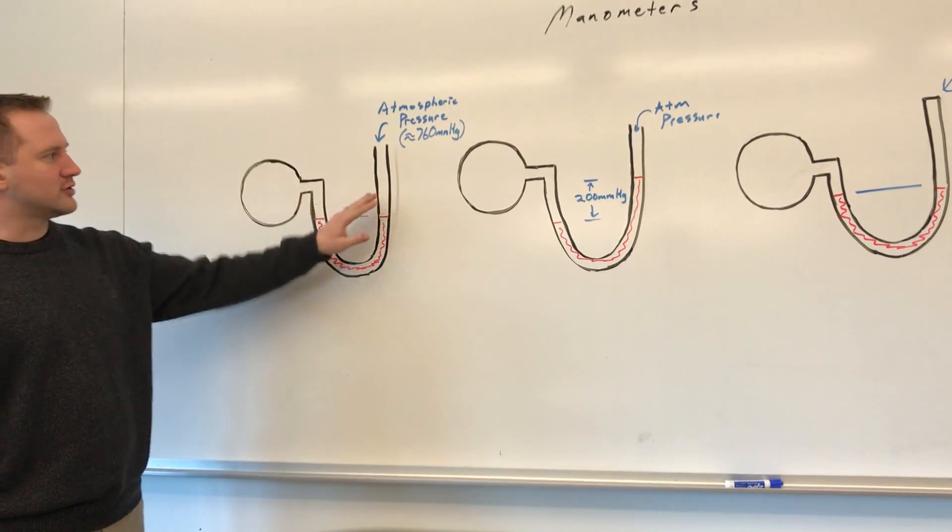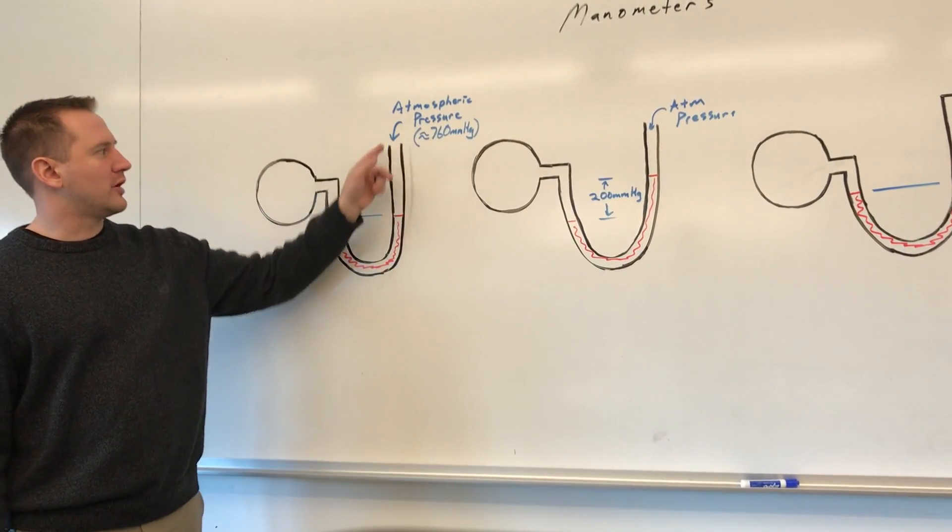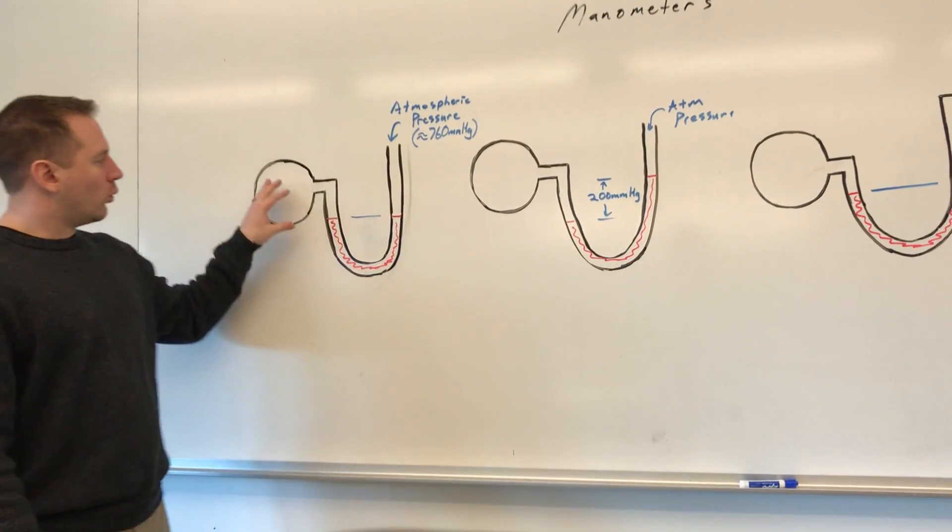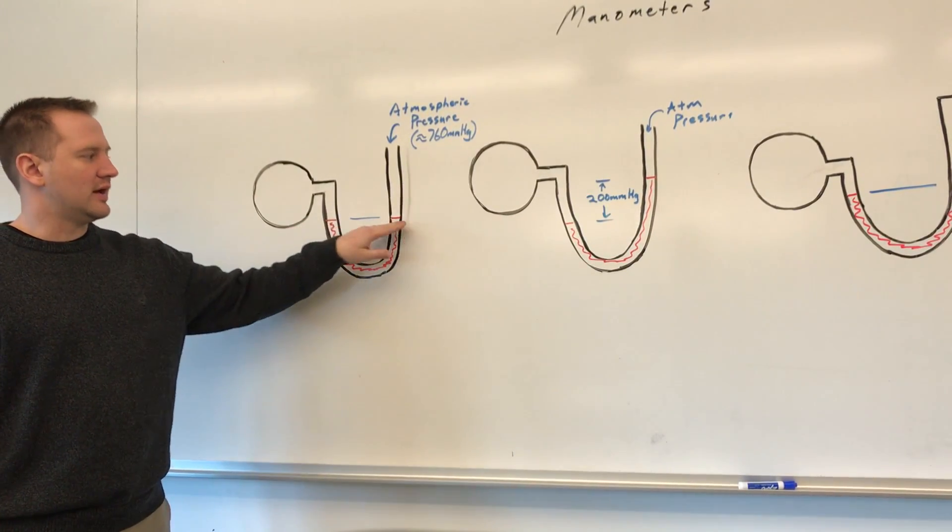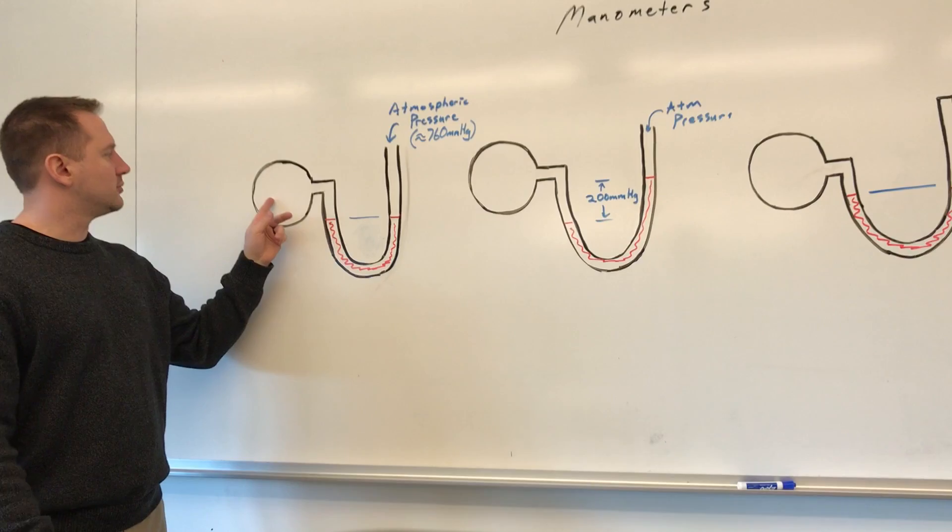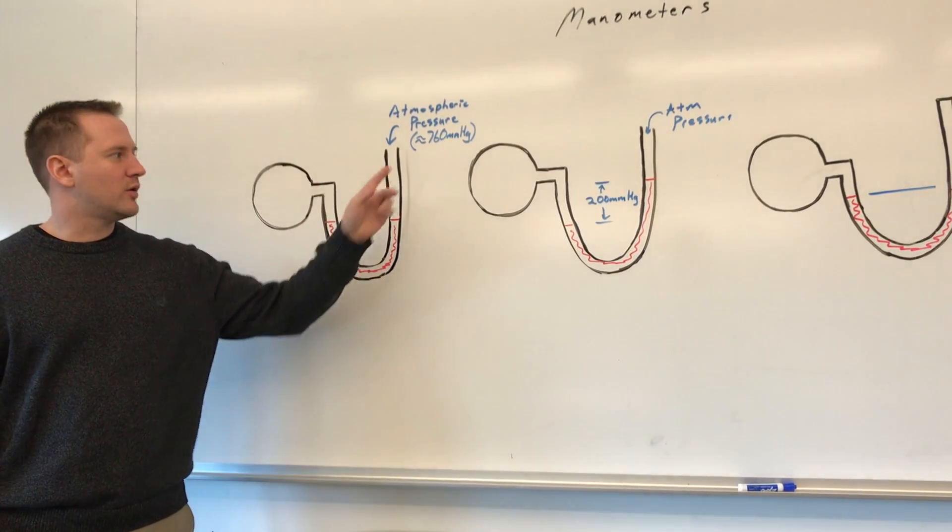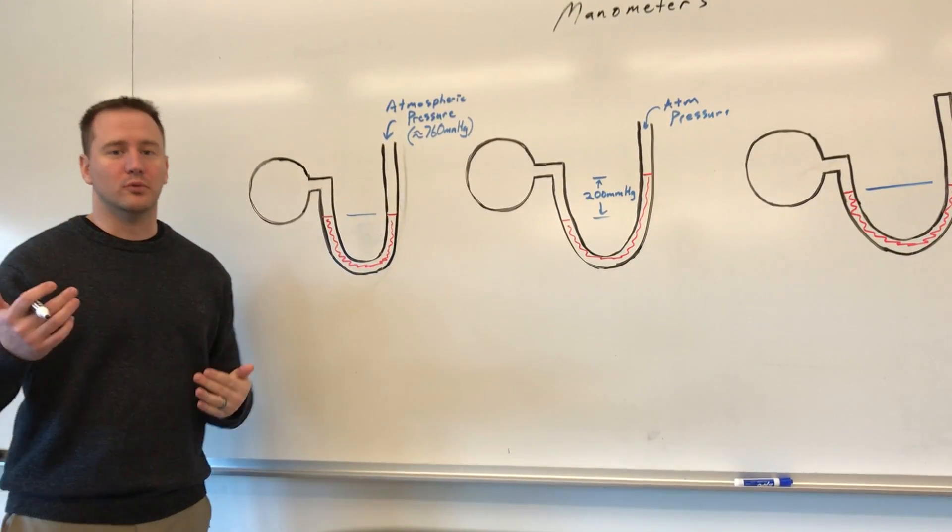If we're looking at this first manometer, you have atmospheric pressure pushing down on it from outside. When the levels are equal like I have right here, this tells us that the pressure being exerted from inside is equivalent. Otherwise mercury would move one way up the tube.